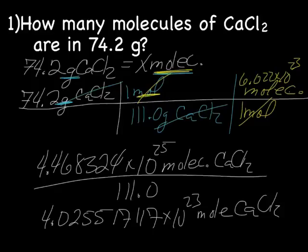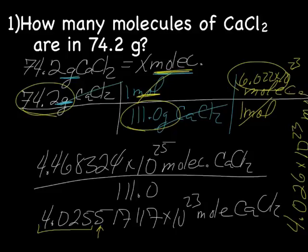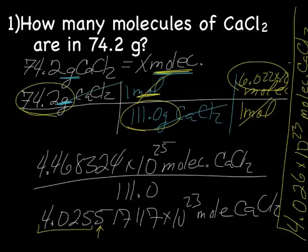Let me go back and check our sig figs. We have 3 and 4 and 4, so we'll have 3 sig figs. And the 5 we're going to drop is 5 or more, so we need to round up. So the final answer is 4.026 times 10 to the 23rd molecules CaCl2. That's it for today. Bye.